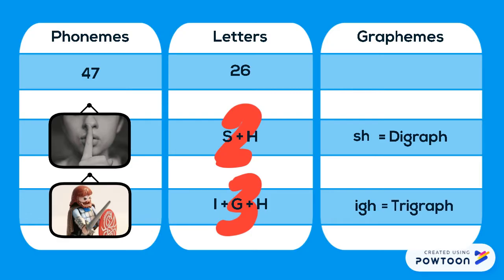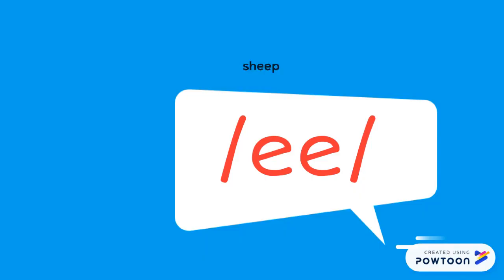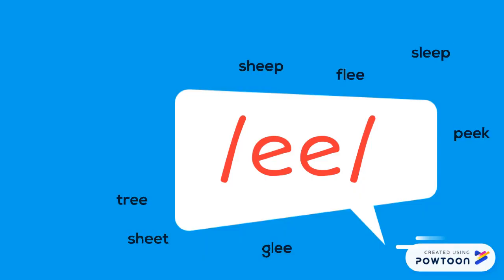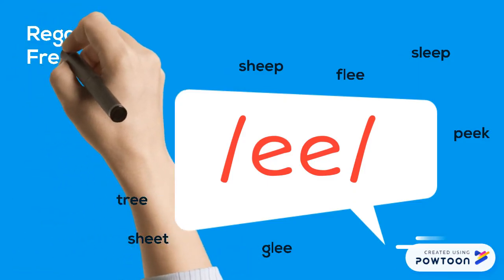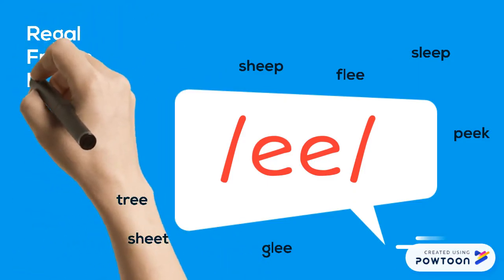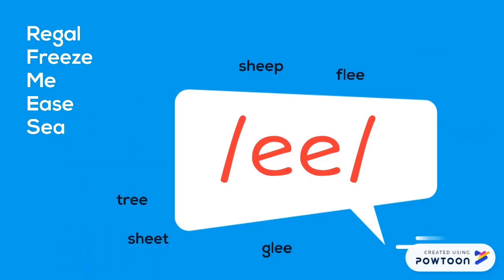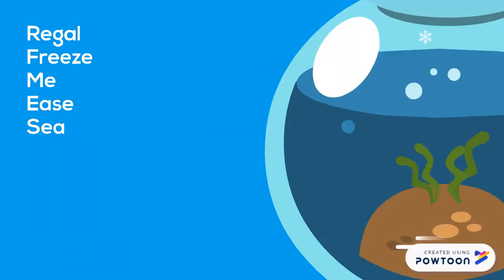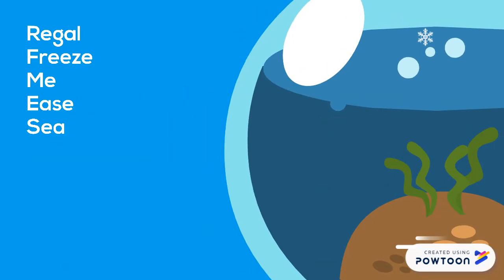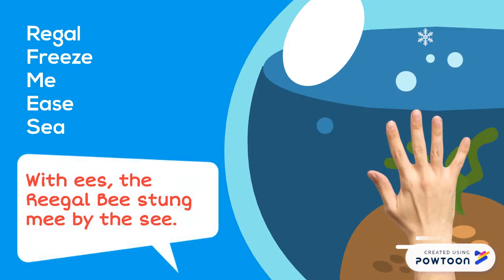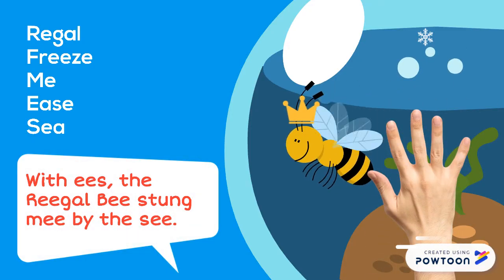When your child begins learning phonics, they will learn the most common ways that each phoneme can be represented. Of course, there are often many ways of representing the same phoneme. Letters on paper are not intended to represent only sound — they are words with meaning, and phonics is not the only tool your child will need in order to learn to spell.